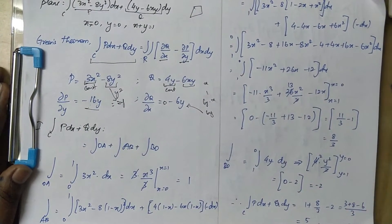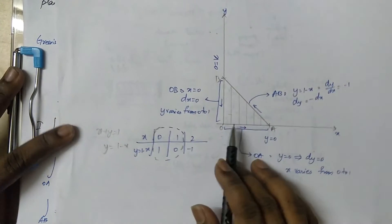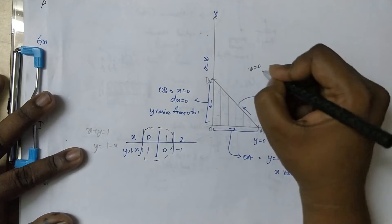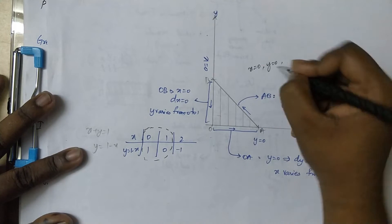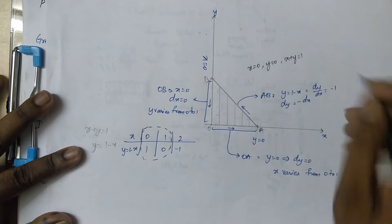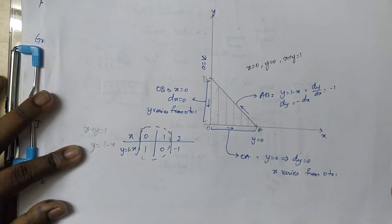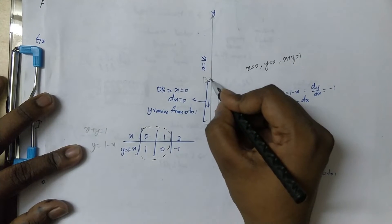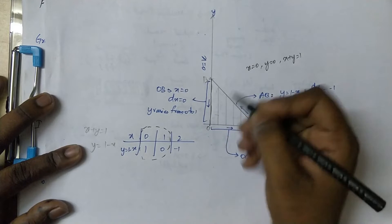So we find the integral using 3 limits: x equal to 0, y equal to 0, and x plus y equal to 1. These are the 3 boundary lines. The line x equal to 0 is on the vertical axis.